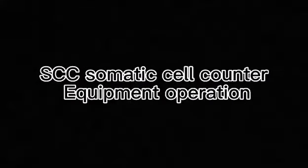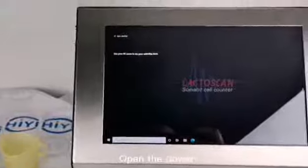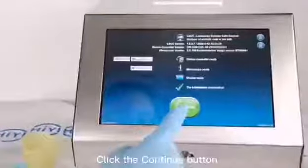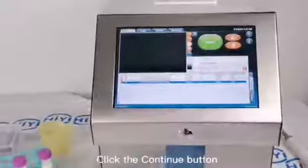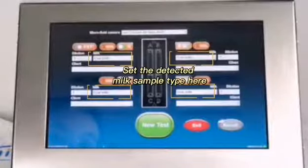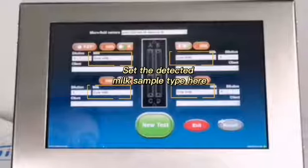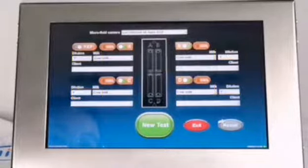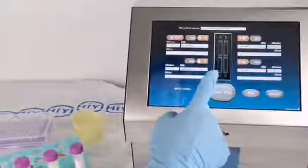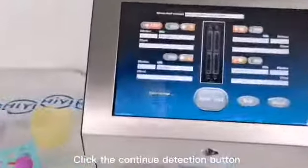Equipment operation. Open the power. Preheating. Click the continue button. Click the start button. Set the detected milk sample type here. Set the sample name here. Click the continue detection button.